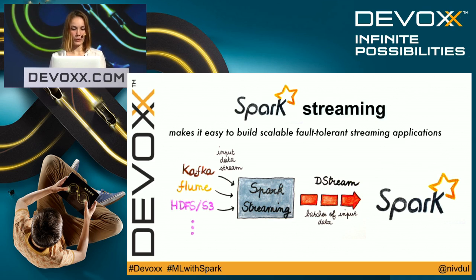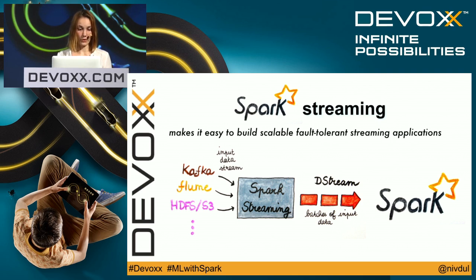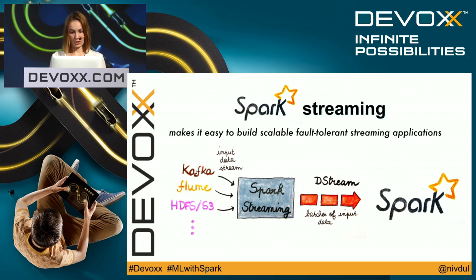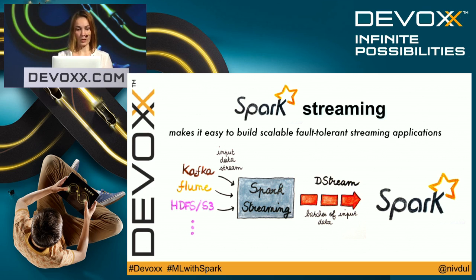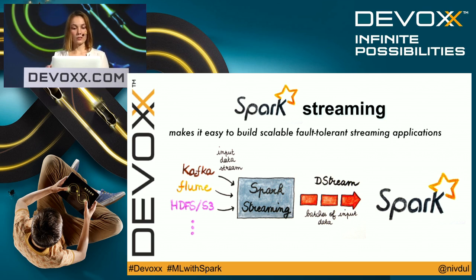First, Spark Streaming — a component for stream processing of live data streams. You take data from sources like Kafka, Flume, or HDFS. Spark Streaming receives the input data streams and divides them into batches — you can choose the batch window. Each batch is a DStream, an abstraction in Spark Streaming, and each DStream can be viewed as a sequence of RDDs, which Spark then processes as before.